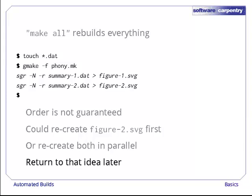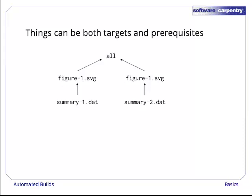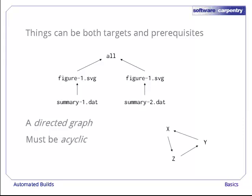Something else this example shows us is that a single thing can be a target in one rule and a prerequisite in others. The dependencies between the files mentioned in the makefile make up a directed graph. In order for make to run, this graph must not contain any cycles. For example, if x depends on y, y depends on z, and z depends on x, there is nothing make can build first. Everything it might build depends on something else.